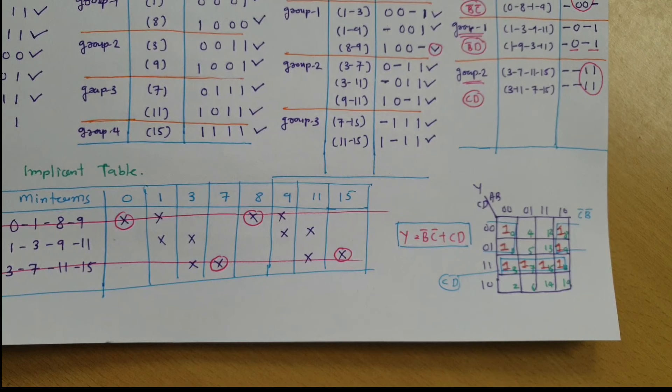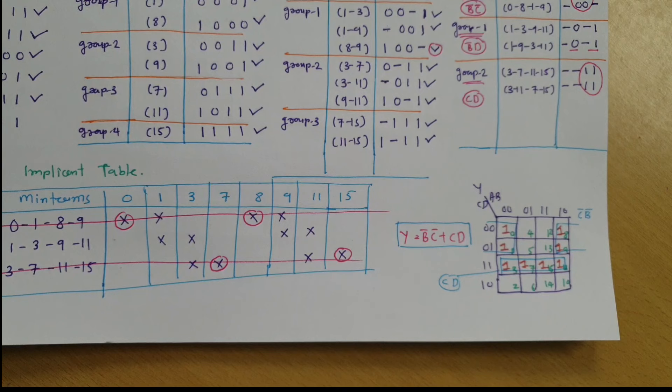This is how we solve questions using the Quine-McCluskey minimization technique. Note that if a question specifically asks for Quine-McCluskey, only then should you use this method — otherwise the Karnaugh map is better and faster, especially for entrance examinations. Thank you so much for watching; please share your valuable suggestions so I can make videos that resolve your queries.